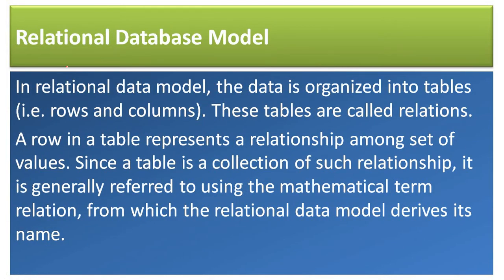Next topic: what is the Relational Database Model? In a relational database model, the data is organized into tables — that is, rows and columns. The table is called a relation. Multiple tables are made, and every table is related to each other — that is called a relation. A row in a table represents a relationship among a set of values.